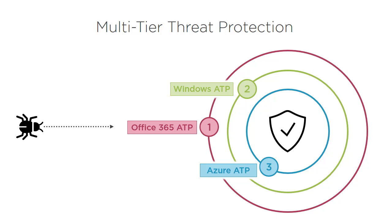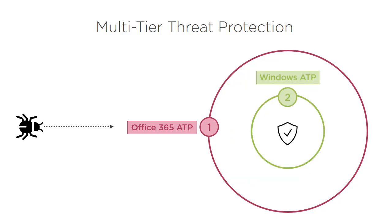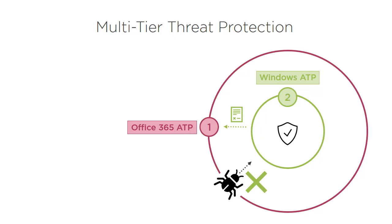What is unique with Microsoft's threat protection offering is the level of integration between these products. If an attack in the form of a malicious attachment was not detected by Office 365 ATP, then Windows ATP can detect that this attachment is in fact malicious code trying to do bad things on the Windows device. Not only can Windows ATP detect and stop attacks on that machine, but it will send the attachment file information to Office 365 ATP, asking it to block this file in the future and to find out who received the same attachment in the enterprise and delete it from other recipients' mailboxes.